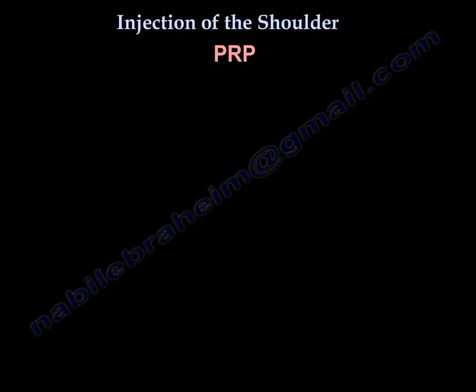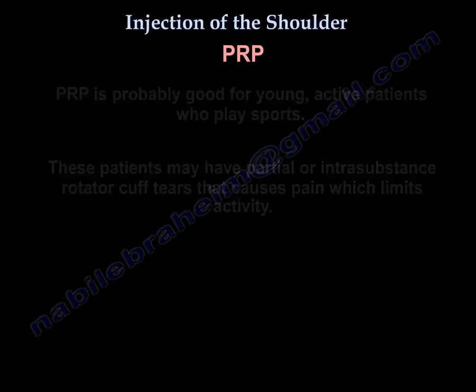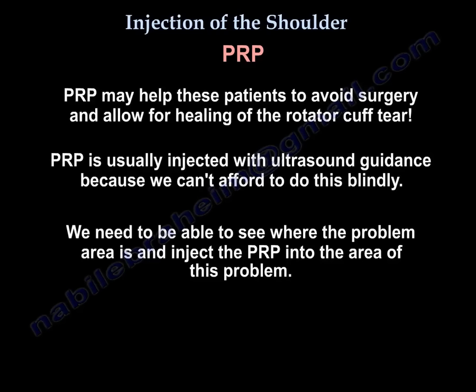PRP is probably good for a young, active patient that plays sports and has a partial tear or intersubstance cuff tear that causes pain limiting their activity. The PRP may help this patient to avoid surgery and may allow healing of the tear. Usually the platelet is injected under ultrasound guidance, because you can't afford to use it blindly — you need to see where the problem is and inject that area precisely.